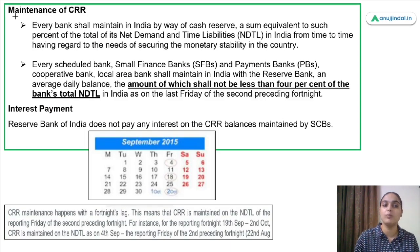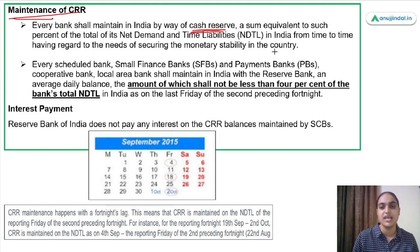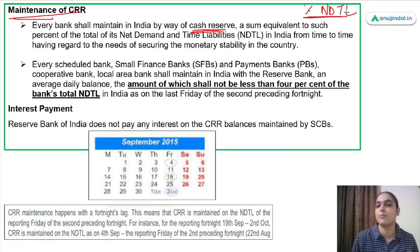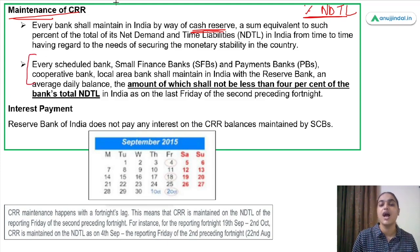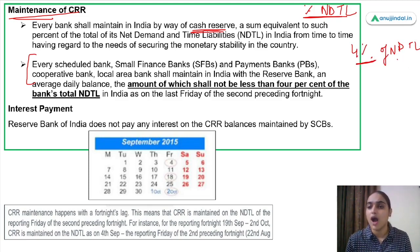Every bank in India will maintain cash reserves equivalent to a percentage of its total net demand and time liabilities. Scheduled banks, small finance banks, payment banks, cooperative banks, and local area banks must all maintain CRR. How much? An amount not less than 4% of NDTL. To determine this NDTL, we take the value as on the last Friday of the second preceding fortnight.